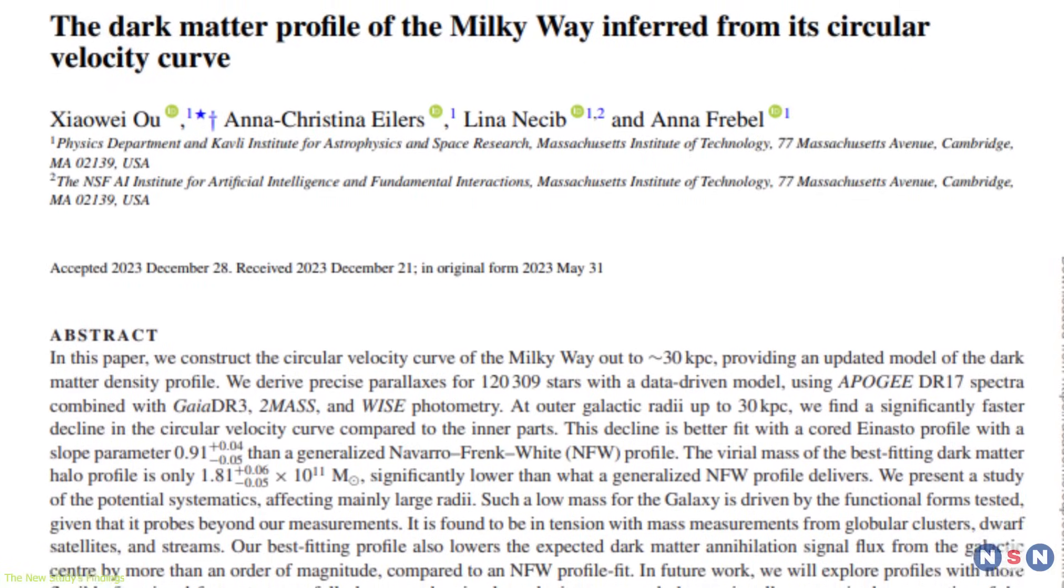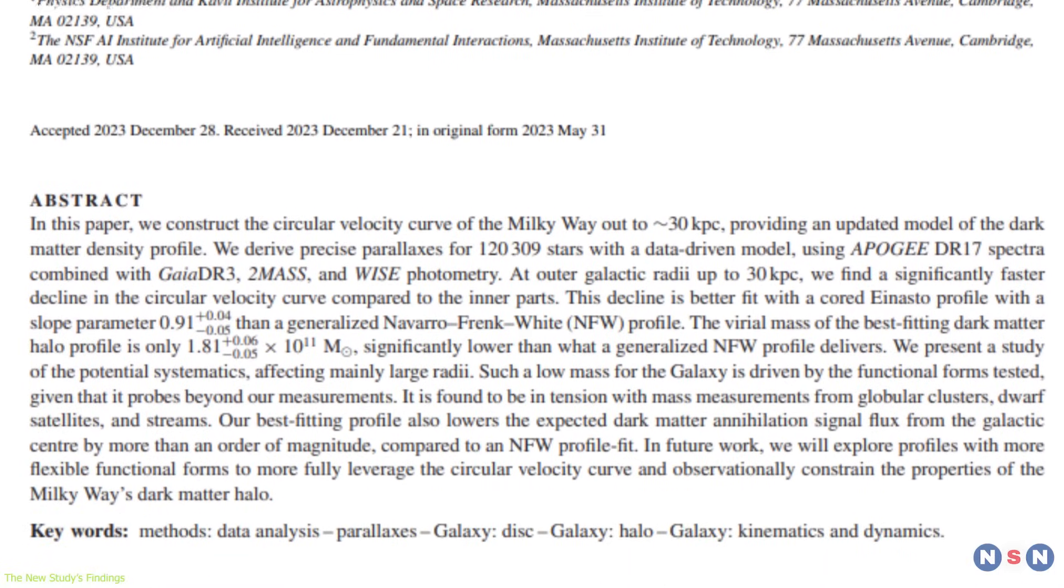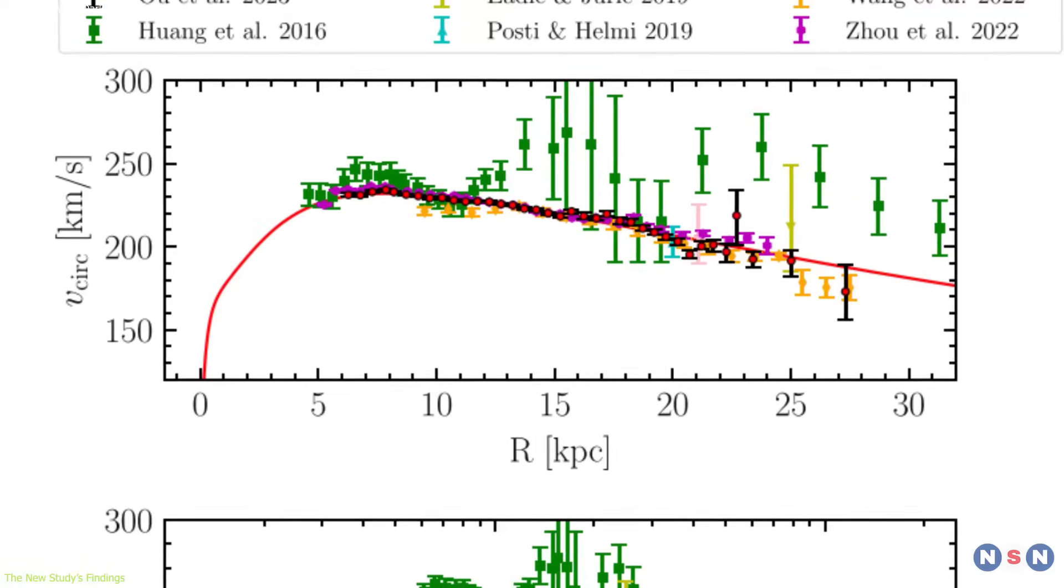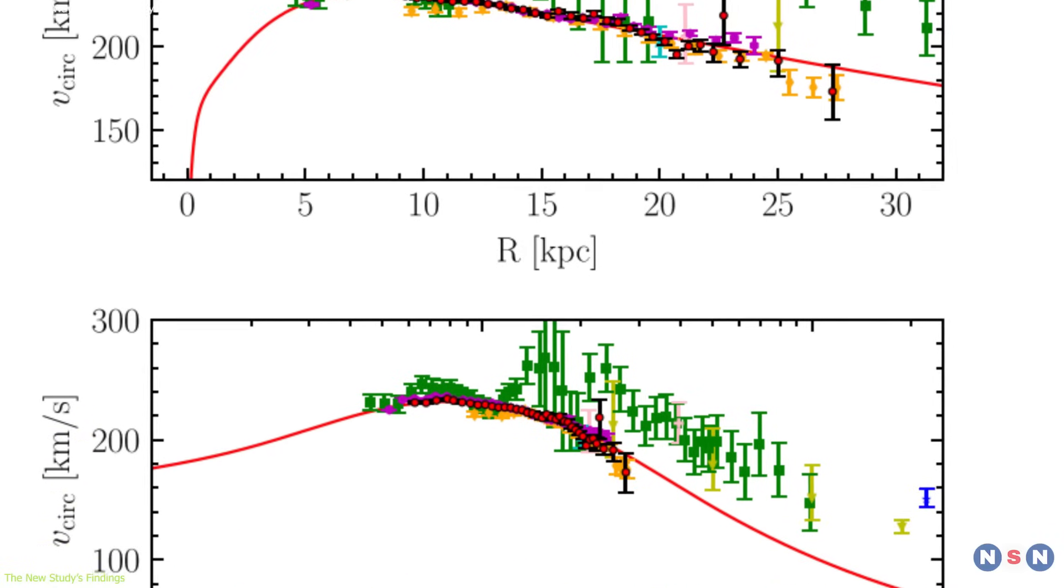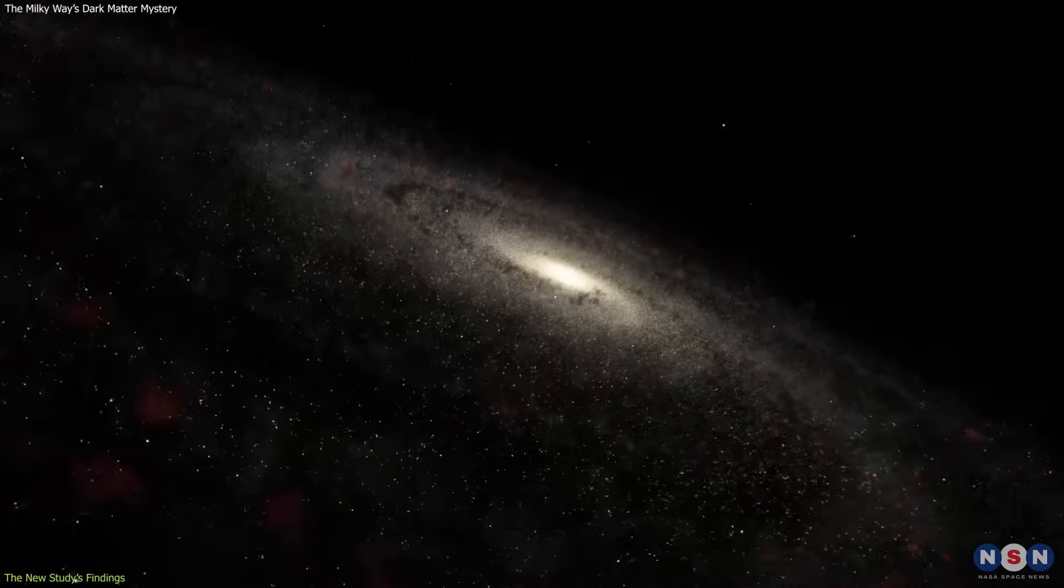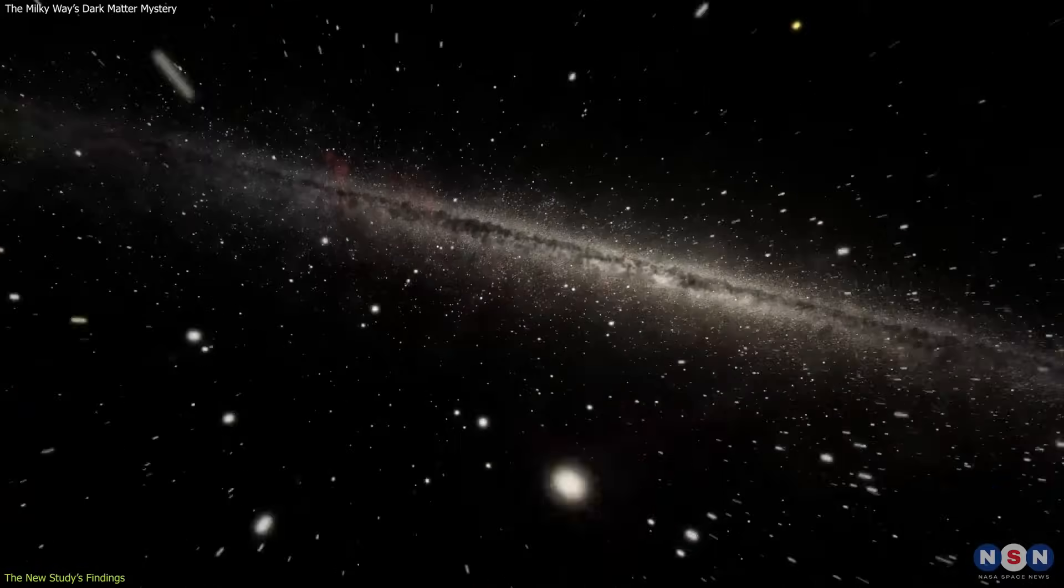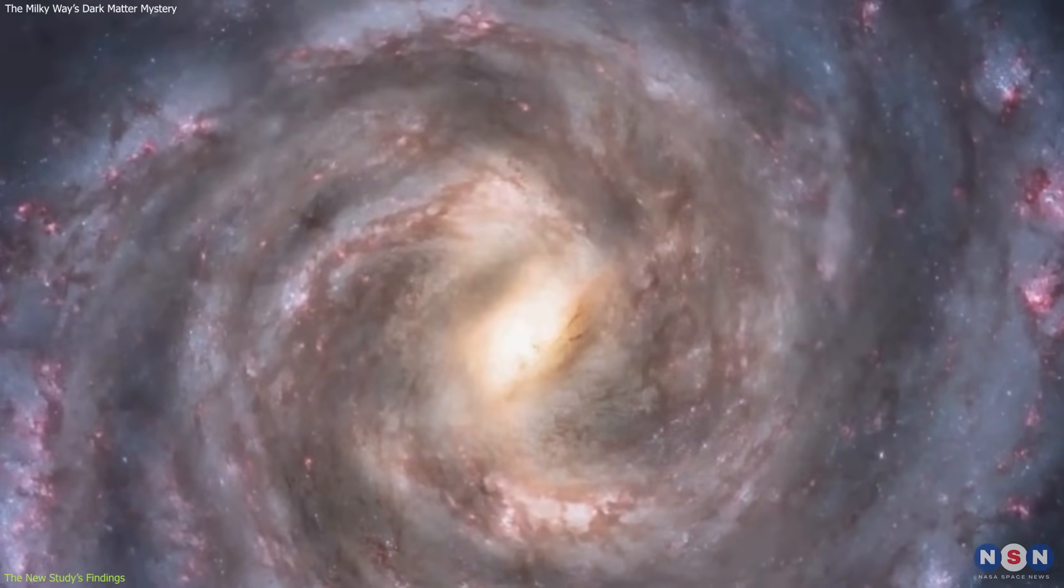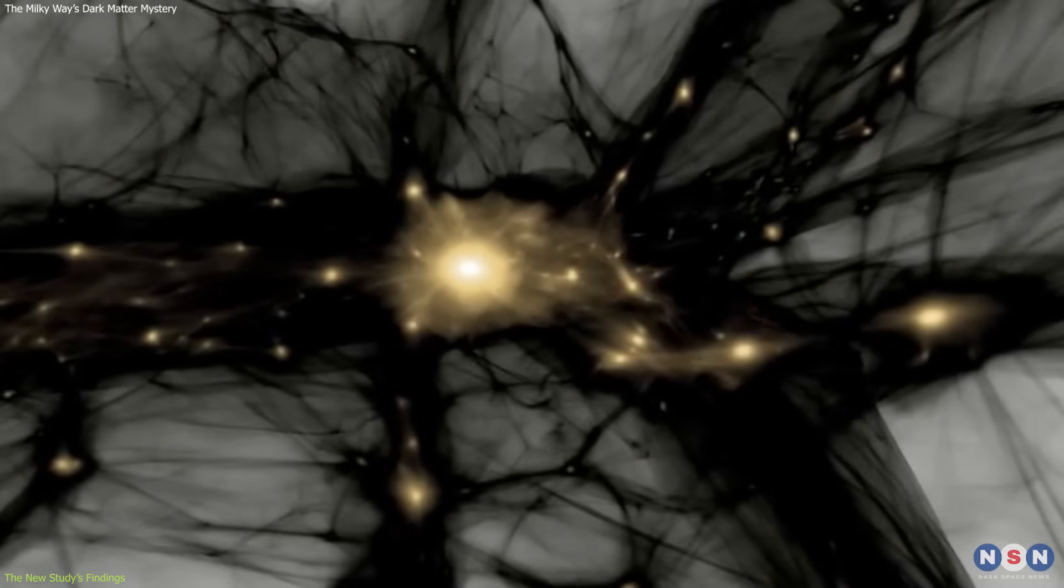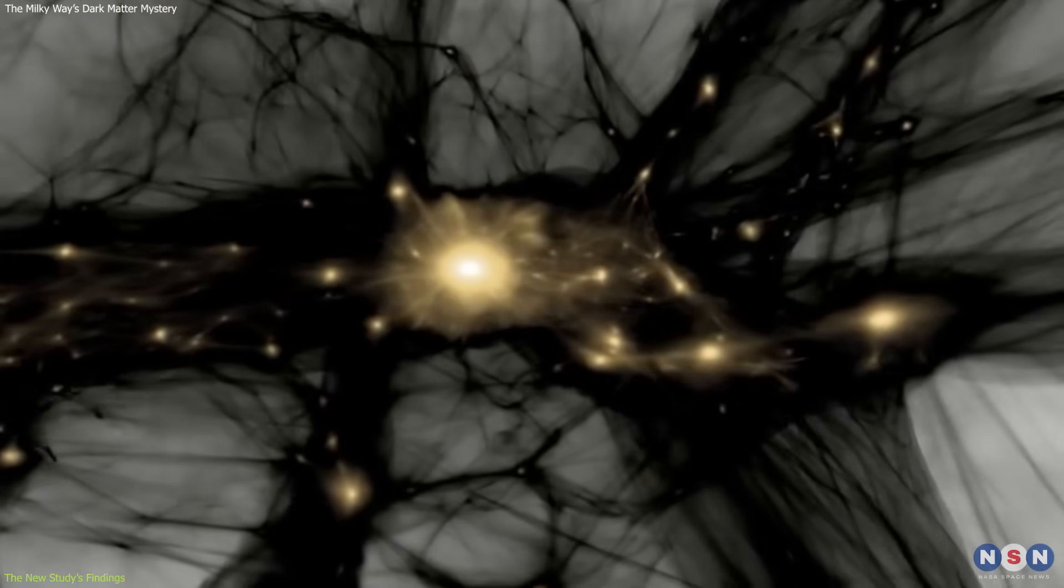However, the new study found that the rotation curve of the Milky Way galaxy is not flat or rising, but falling, meaning that the stars at the edge of the galaxy are moving slower than the stars near the center. This implies that the galaxy's core may be lighter in mass and contain less dark matter than previously estimated.